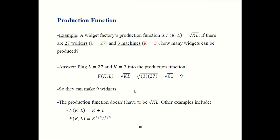Of course the production function isn't always square root of K times L — different firms have different production functions. Here are some common examples: production could be K plus L, so number of machines plus number of workers. You can also see something like the cube root of K times L to the two-thirds. This is a popular choice in macro — we talk about why in Intermediate Macroeconomics.